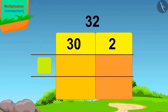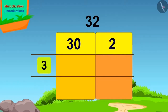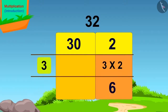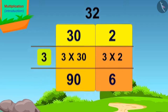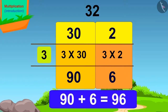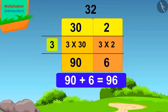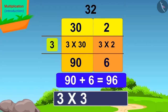We will write it in this way. What is the number we have to multiply 32 with? 3. We will write 3 here like this. Now we will multiply the first 2 by 3. 3 times 2 is 6. We will write this answer here. Now we will multiply 30 by 3. 3 times 30 is 90. We write this answer here. Now it's very easy. On adding 6 and 90, we get 96. This way, we got our answer.